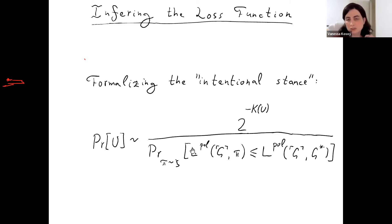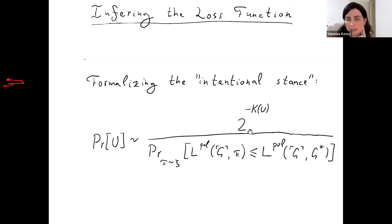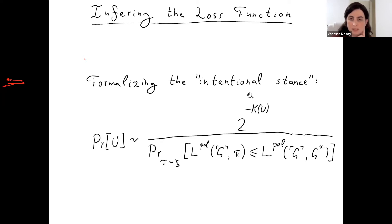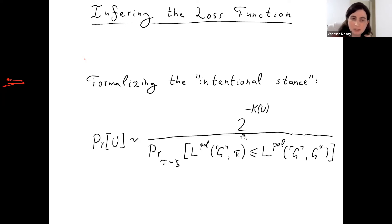We're assigning more probability to loss functions such that the agent is doing better than most other policies, and we penalize by complexity. If we build a contrived loss function that just wants the agent to follow this exact policy, all the bits won out in the denominator and we lose them in the numerator — so contrived loss functions don't get a lot of weight. Whereas if the agent's policy approaches the ideal policy for a particular loss function, the probability distribution becomes sharply concentrated on that loss function.